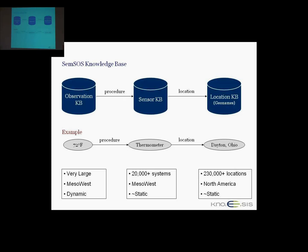Here's an example of what some of these facts look like. There are actually two triples constructed into a graph. The observation would be a temperature observation at 72 degrees Fahrenheit. This observation came from a procedure — some thermometer — and that thermometer is located in Dayton, Ohio. This shows the different facts in the different knowledge bases and how they're connected. The observation knowledge base came from MESA West, it's very large — a billion triples — and it's fairly dynamic, constantly adding new observations. The sensor knowledge base has some 20,000 systems, and the location knowledge base has some 230,000 locations in North America.